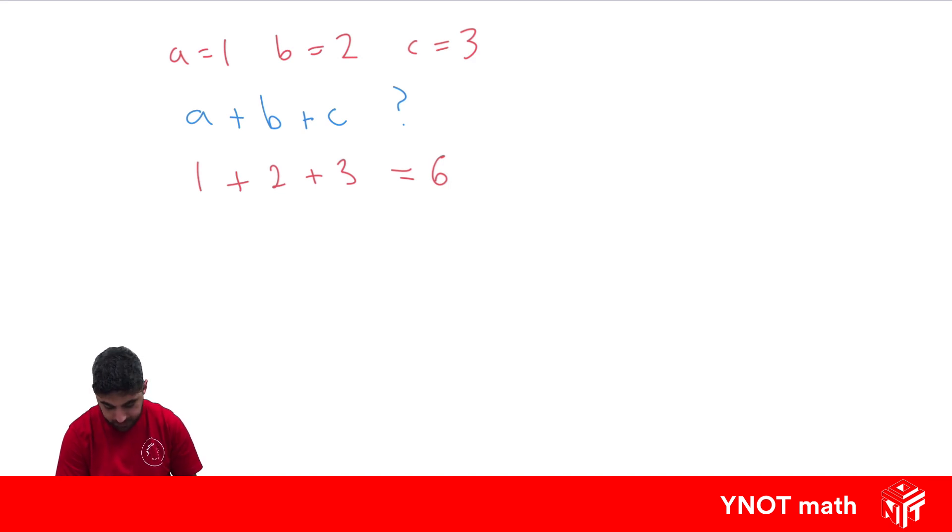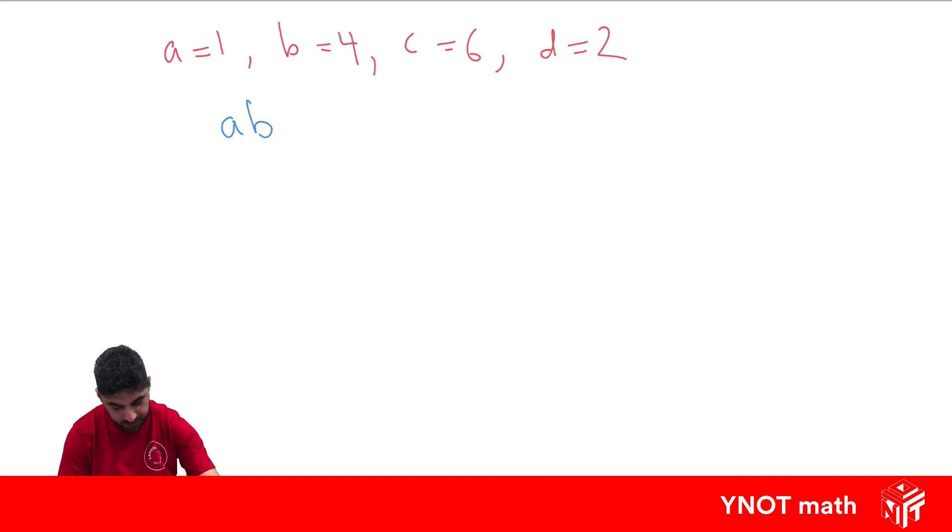Let's look at another example. If we know a is equal to 1, b is equal to 4, c is equal to 6, and d is equal to 2, what's the value of ab plus cd minus a squared?